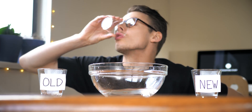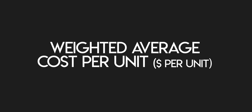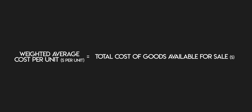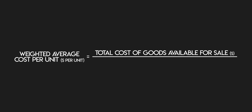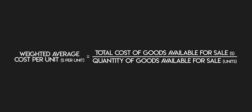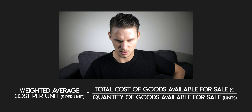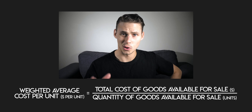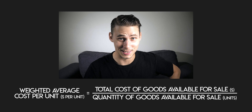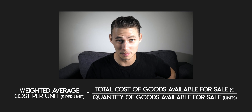Remember, this is an assumption. You can work out your weighted average cost per unit by taking your total cost of goods available for sale and dividing it by your quantity of goods available for sale. Don't worry, we'll come back to this equation soon.